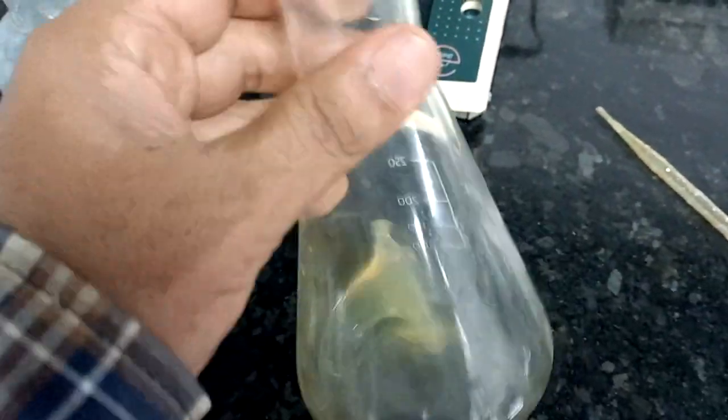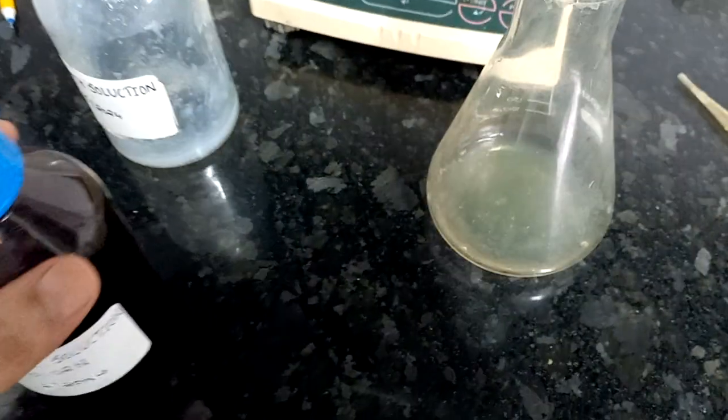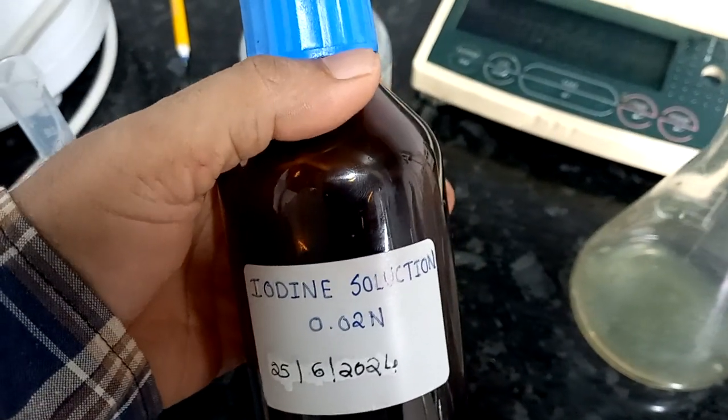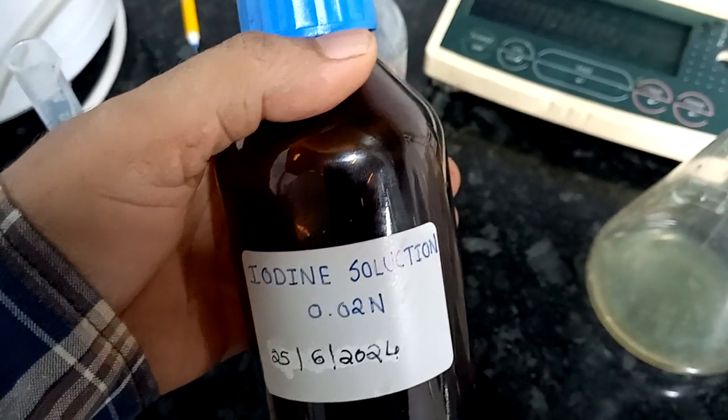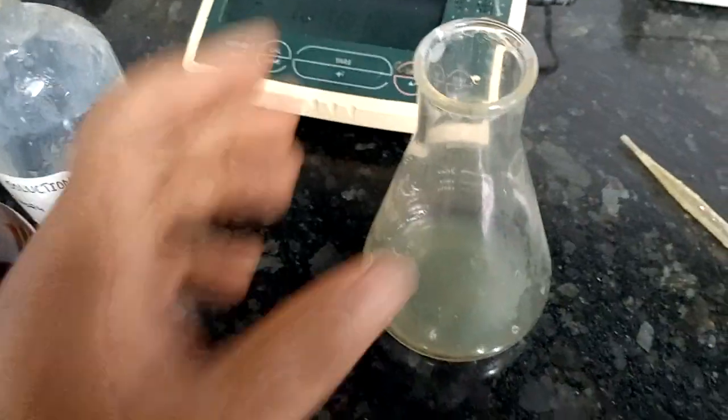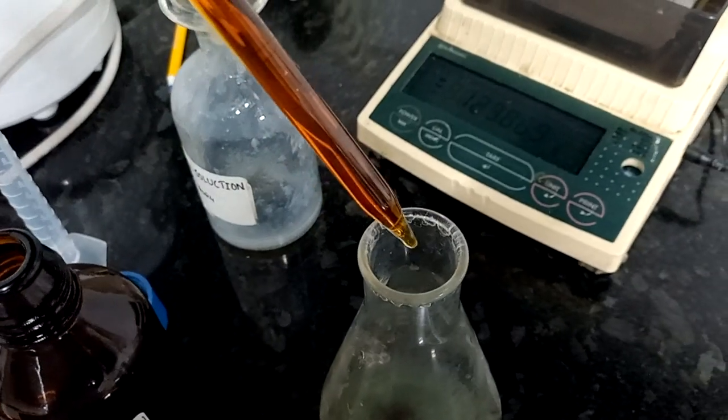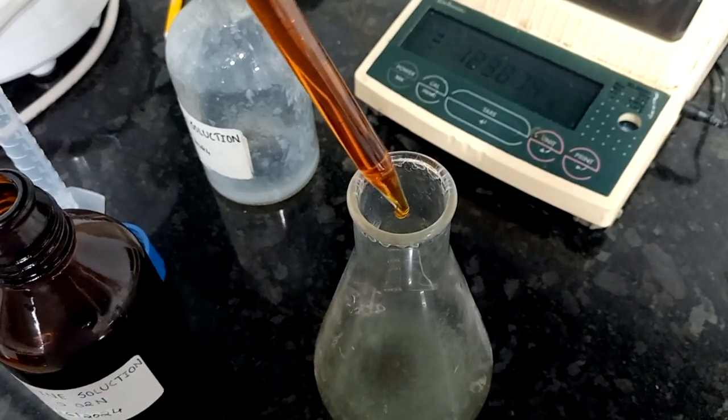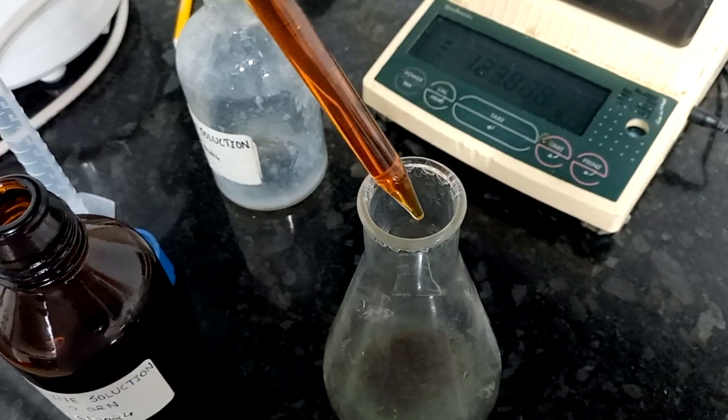Shake well, then take iodine solution 0.02 normality and titrate against this sample solution. Add iodine solution into the sample and measure the reading.